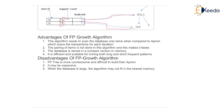The advantages of the FP Growth algorithm are: this algorithm needs to scan the database only twice, compared to Apriori which scans the transactions for each iteration. Pairing of item sets is not done in this algorithm, making it faster. The database is stored in a compact version and it is an efficient and scalable mining method. The disadvantages are: the FP tree is more cumbersome and difficult to build than Apriori; it may be expensive when the database is large; and the algorithm may not fit in shared memory. In this video we have seen the FP Growth algorithm, through which we can perform different pattern mining techniques and overcome the limitations of the Apriori algorithm.